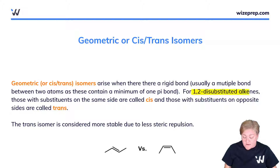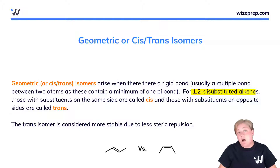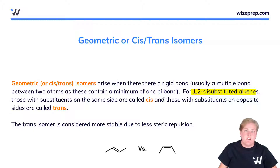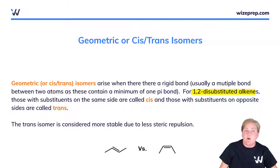The first is the 1,2-disubstituted alkene. Those with substituents on the same side are called cis, and those on the opposite side are called trans. The 1,2-disubstitution nomenclature comes from having one group on one carbon and one group on the other. When we're talking about the same side, we're talking about cutting the alkene in half horizontally and seeing if groups are on the same or opposite sides.